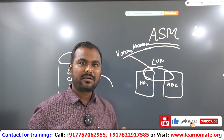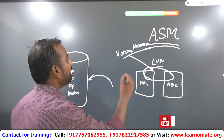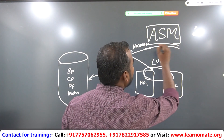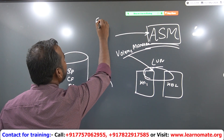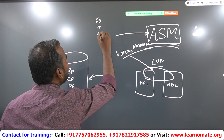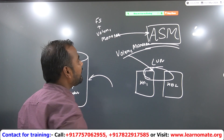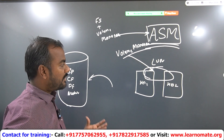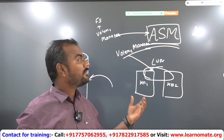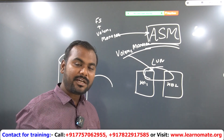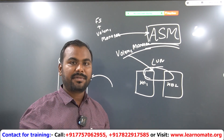Then Oracle thought: why don't we create our own volume manager? And that is the reason they came up with the concept of ASM. So ASM is not only just a file system, it is also your volume manager, mainly responsible for storing your database-related files. Earlier we were storing data on a file system; now we have a new file system provided by Oracle itself — we call it ASM, Automatic Storage Management.